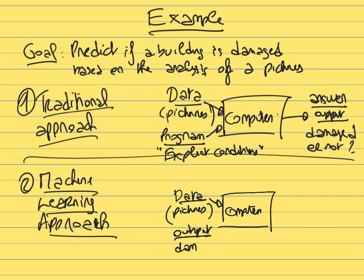We provide pictures where we already know the answer — some labeled as damaged, others as not damaged. These are training examples. We let the computer come up with its own way to recognize damaged versus undamaged buildings.